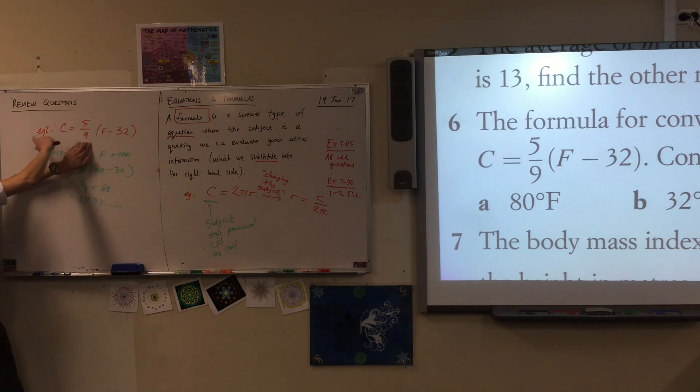What number will I multiply both sides by then I'll get rid of five over nine? Nine over five, which is called the reciprocal, right?